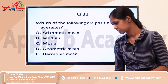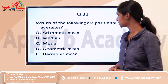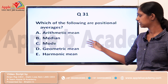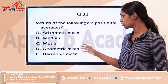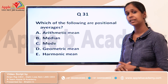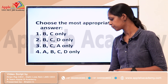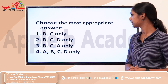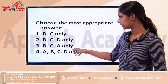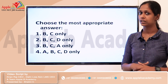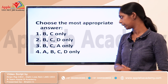For the first question: which of the following are positional averages? The options are arithmetic mean, median, mode, geometric mean, and harmonic mean. Choose the most appropriate answer: B and C only, BCD only, BCA only, or ABCD only.